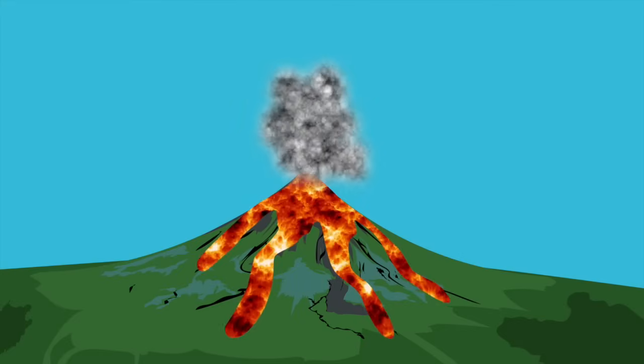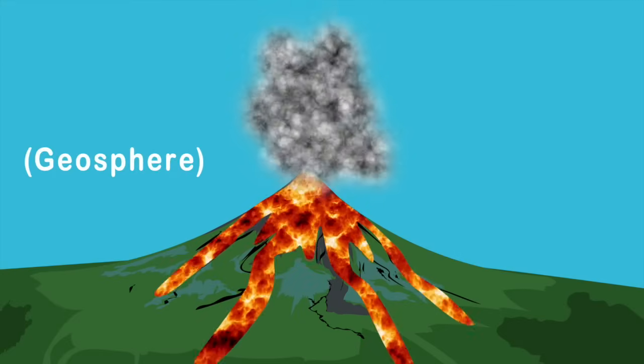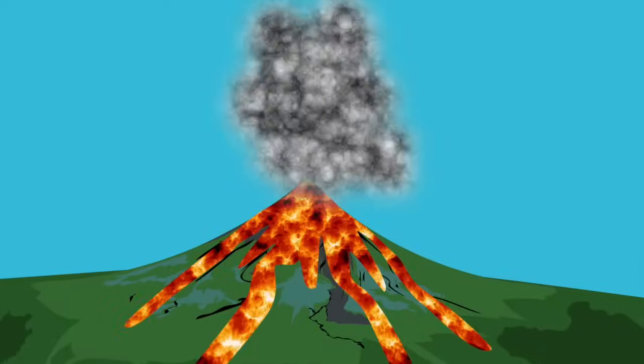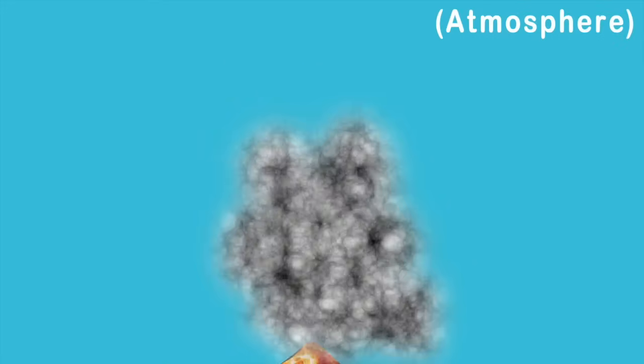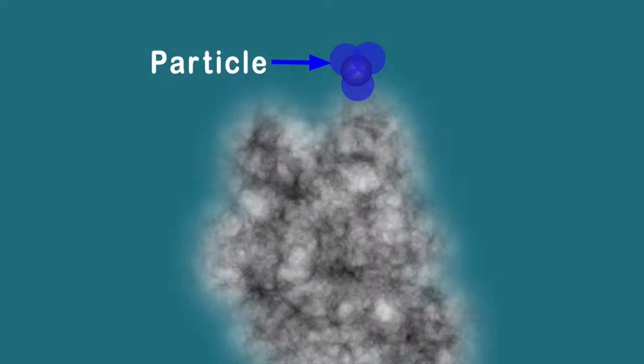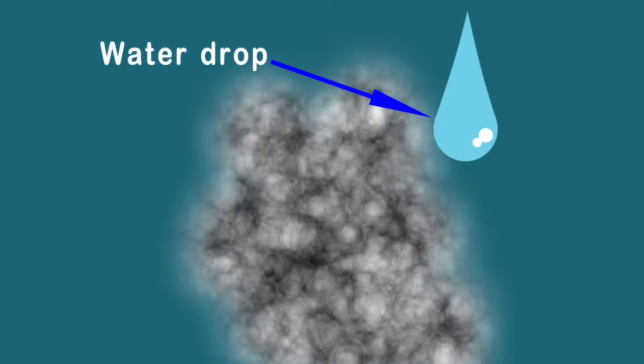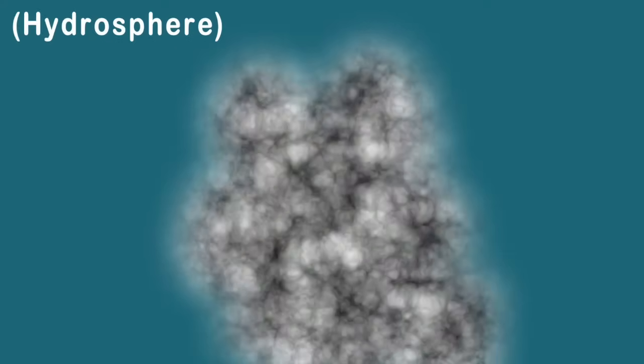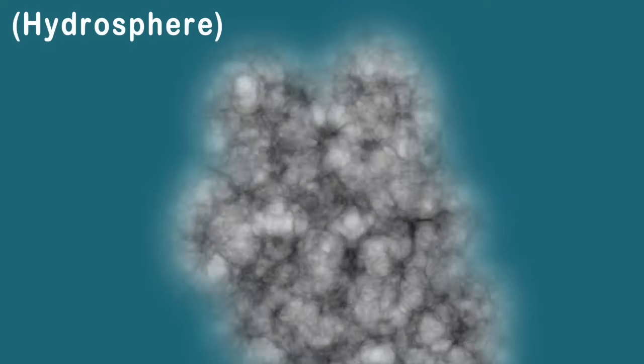When volcanoes erupt from the geosphere, it releases particles and gas into the atmosphere. These particles act as the nuclei to help form water drops, that's the hydrosphere at work and it never stops.